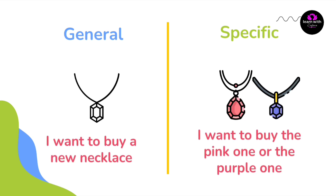I want to buy a necklace — ابغى اشتري سلسال، ما حددنا نوعه ذهب او فضة، عام. في الاسماء: I want to buy the pink one or the purple one — ابغى اشتري يا الوردي يا البنفسجي.